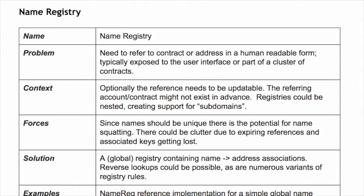There can be all kinds of different implementations: you can update the reference, point a name to something that doesn't exist yet, or create nested structures like subdomains in a DNS name registry.